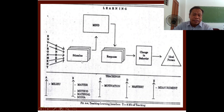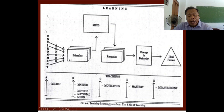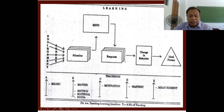The stimulus is represented by the matter or the content of the subject, the method, the material, and the media. These four Ms act as stimuli for the mind. When the mind responds to this — the content or matter, method, material, and media — you have been able to motivate learning. This leads to change in behavior, mainly due to the mastery or internalization of your lessons or contents.